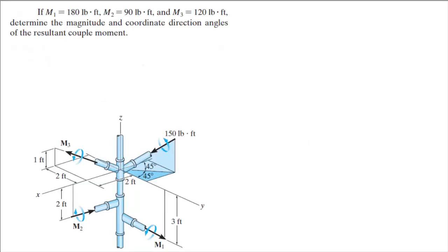Alright guys, let's do this problem where we have M1, M2, and M3 magnitudes and they want you to find the magnitude and coordinate direction angles of the resultant couple moment. Basically what you gotta do is find the Cartesian vector form of all these moments and then add them together — very easy.